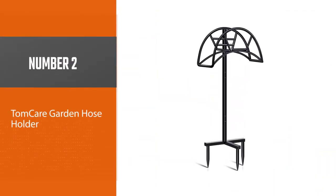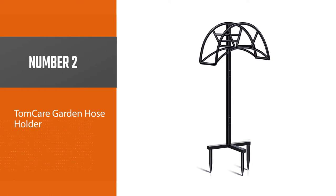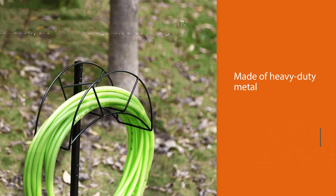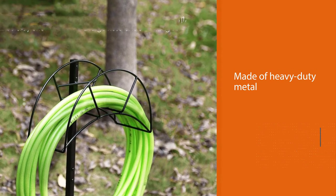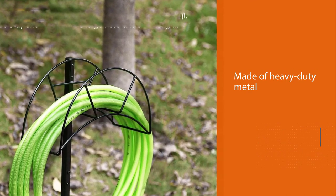Number two: Tom Care garden hose holder. Made of heavy duty metal with three thick anchors, this freestanding reel can be staked virtually anywhere in your yard without taking up a lot of space.